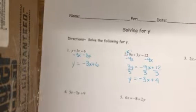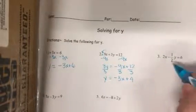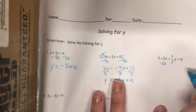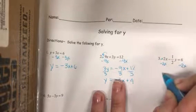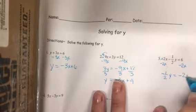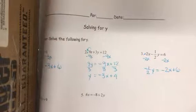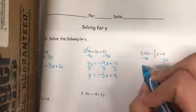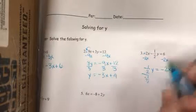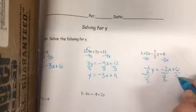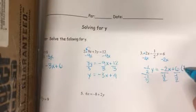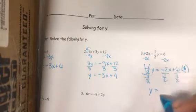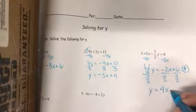Number three, solve for y: we're going to move the x, so we'll move a positive 2x with a negative 2x. Be careful with your negative — this is a negative one-half y equals negative 2x plus 6. We can undo this one-half by dividing by negative one-half, and remember dividing by negative one-half is the same as multiplying by negative 2 over 1 — it has to happen in every single place. So these cancel and we get y equals positive 4x minus 12.